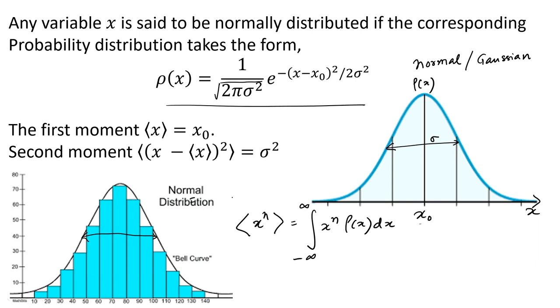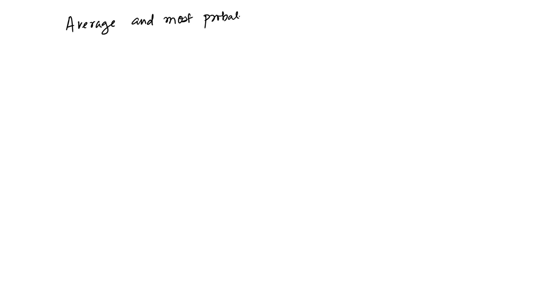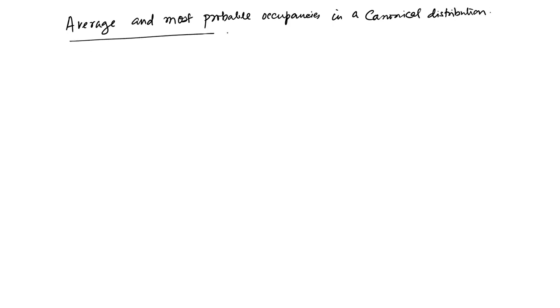We will get back to the canonical distribution and ask: what are the average and most probable occupancies in a canonical distribution? You will see that this canonical distribution is also a sharp distribution—as you deviate from the most probable values of occupancy, the distribution very quickly tapers off.